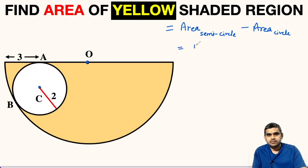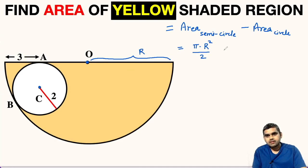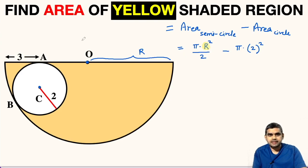The area of the semicircle is pi times radius squared divided by 2, so we write pi times capital R squared over 2, where capital R is the assumed radius of the semicircle. Minus the area of the circle, which is pi times the square of the radius — the radius is 2 units, so 2 squared, giving 4 pi. If we get the value of capital R, we can substitute it and find the required area.